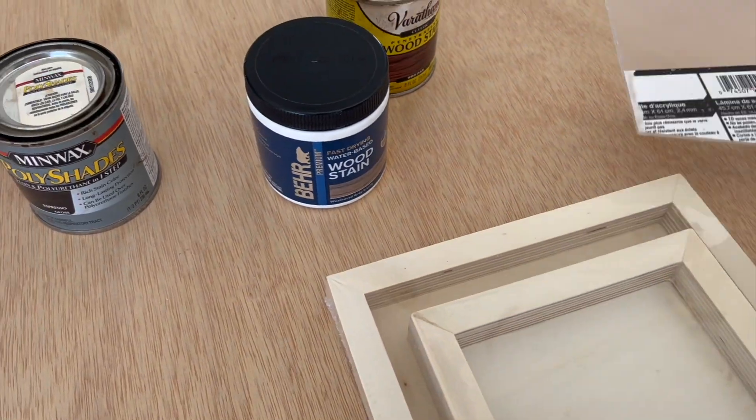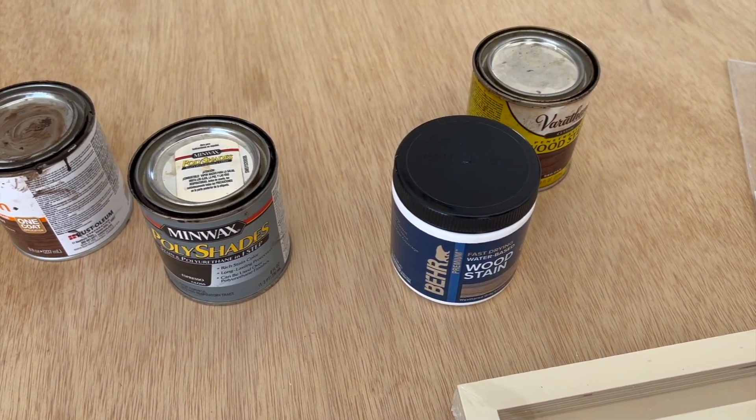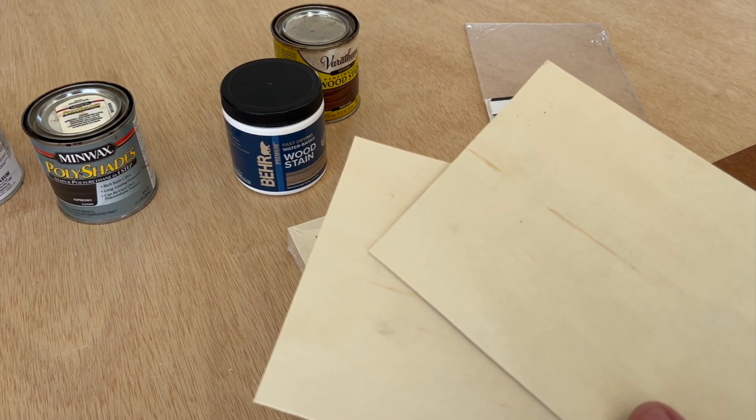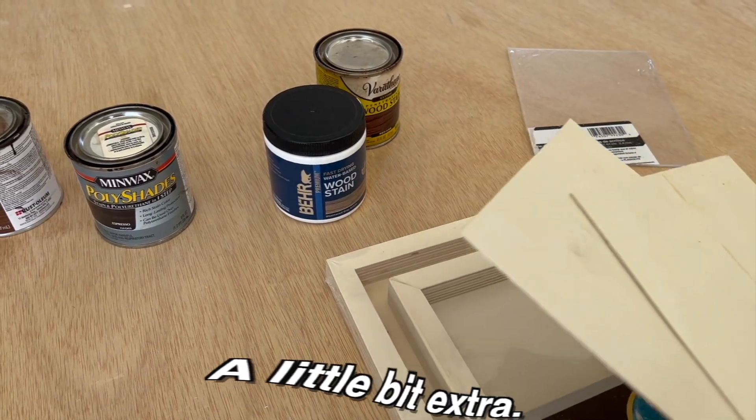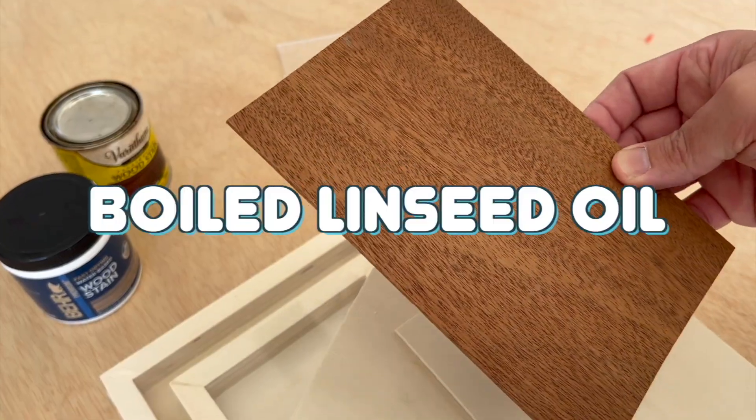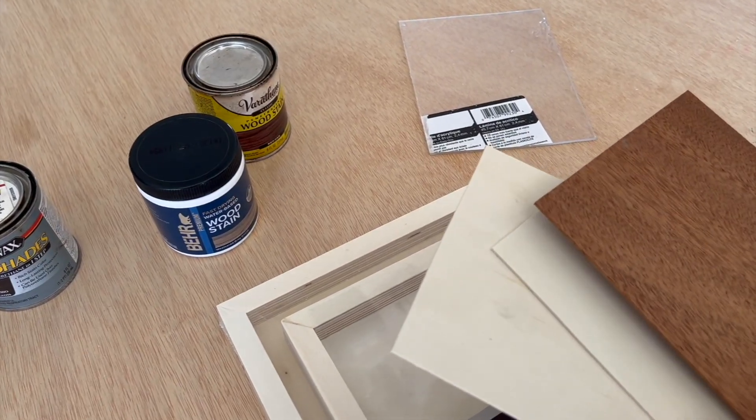Now before we close up everything, we're going to go ahead and stain some of these pieces of wood with some different stain colors to give it a little bit extra. And then I really like this color of wood that we may just put like a linseed oil on. That'll look really cool with the contrast.